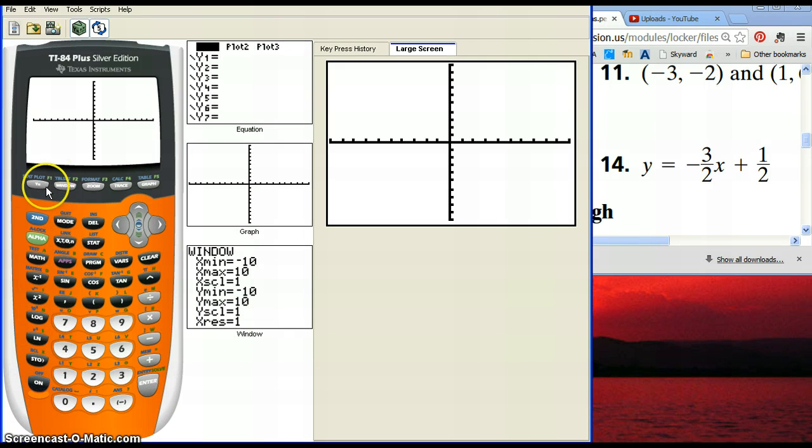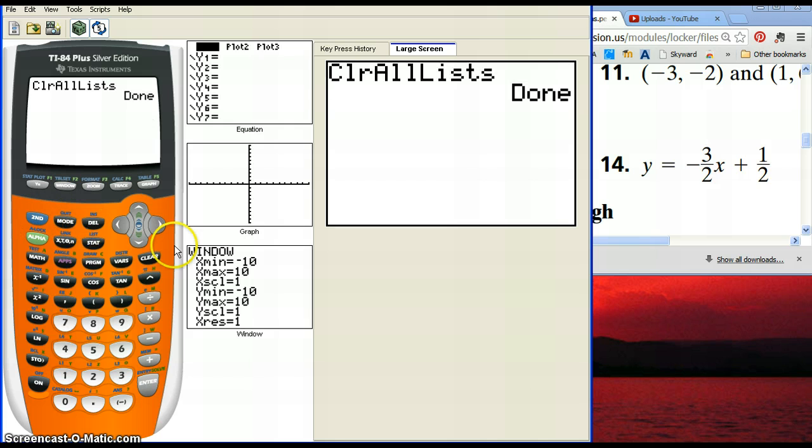The first thing you're going to do is turn your calculator on. You'll see probably your blank screen or something you typed into your calculator previously. If you want to graph something, notice that right here in the upper left-hand corner is a Y equals button. Since we always put our formulas into slope-intercept form, where it's Y equals, you're going to hit that button.